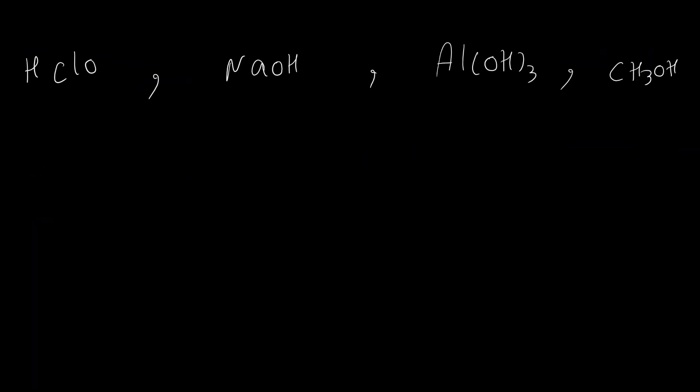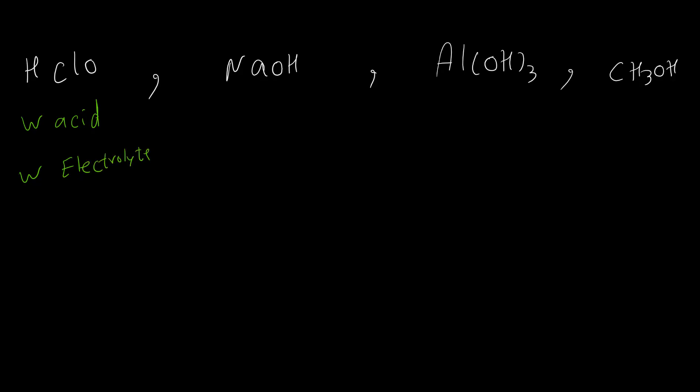Let's identify the type of electrolyte for some compounds. The first one, HClO, is an acid — it starts with hydrogen. But it is not one of the six strong acids we learned. So it is a weak acid and will be a weak electrolyte.